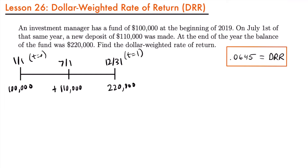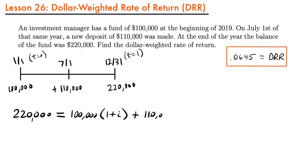Setting up the equation of value for the internal rate of return is very similar. The only difference is that instead of the simple interest accumulation factor, we use the compound interest accumulation factor. So 220,000 equals 100,000 times (1 plus i) to the power of 1, plus 110,000 times (1 plus i) to the power of 6/12 — or one half — since there are six months from the deposit to the end of the timeline, representing one half of a year.